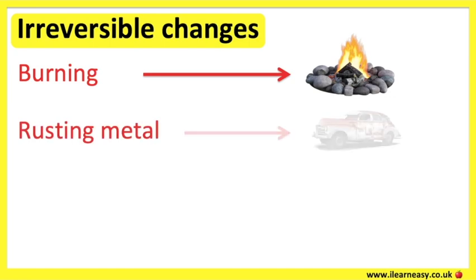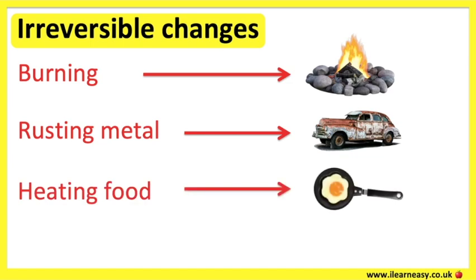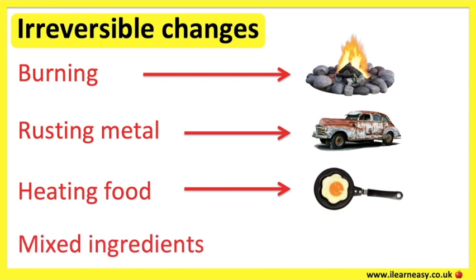Rusting metal: when a metal is exposed to oxygen and water for long enough, a reaction called oxidisation occurs, causing the metal to rust. Heating food — for example, cooking an egg in a pan — the cooked egg can't be reversed back to a raw egg. Mixed ingredients: for example, if you're making bread, you mix all the ingredients to make dough. Once the ingredients are all mixed together, they can't be separated, as the ingredients have permanently changed.